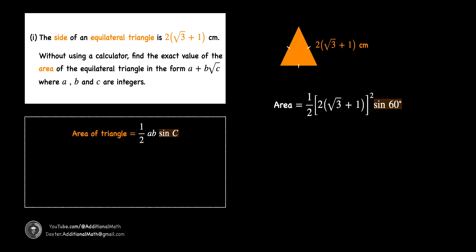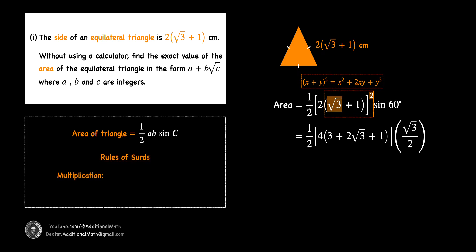Next, squaring 2 gives 4. We use the special algebraic identity (x + y)² = x² + 2xy + y² in the expansion of our surds. To square √3, we apply the multiplication rule of surds: √a × √a equals a, as squaring a square root removes the root. Thus, squaring √3 gives 3.